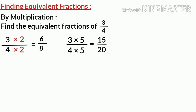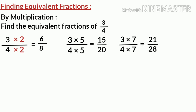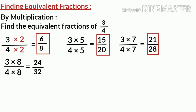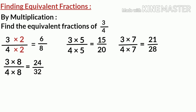Multiplying by 7, we get 3 multiplied by 7 upon 4 multiplied by 7, which is equal to 21 over 28. And multiplying by 8, we get 3 multiplied by 8 upon 4 multiplied by 8, which is equal to 24 upon 32. So, 6 by 8, 15 by 20, 21 by 28, and 24 by 32 are a few equivalent fractions of 3 by 4.